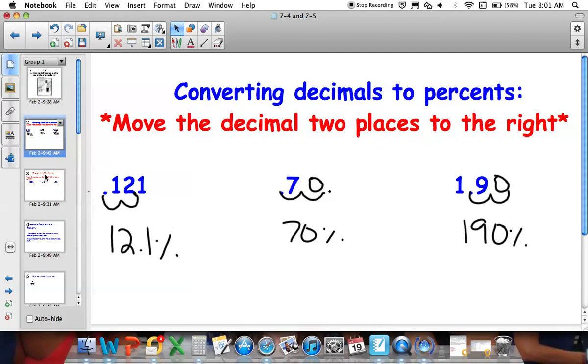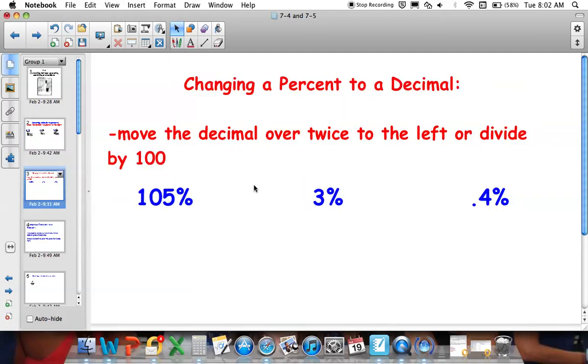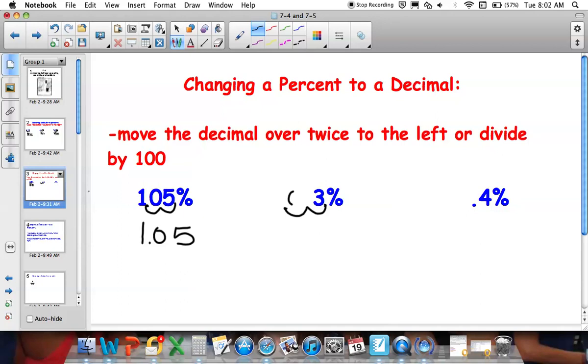So now let's move on to converting a percent to a decimal. It's just the same thing except in reverse. When you convert a percent to a decimal, you divide by 100 or move the decimal two places to the left. So, 105% is the same as 1.05. 3% is the same as, notice we have to fill in a zero here, 3 hundredths. And 0.4% or 4 tenths percent is the same as 0.004.